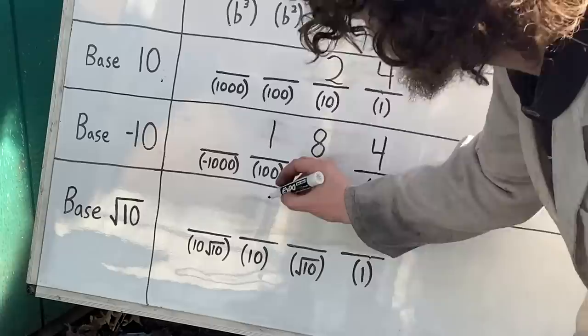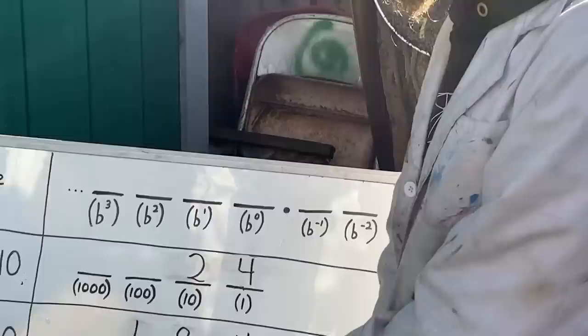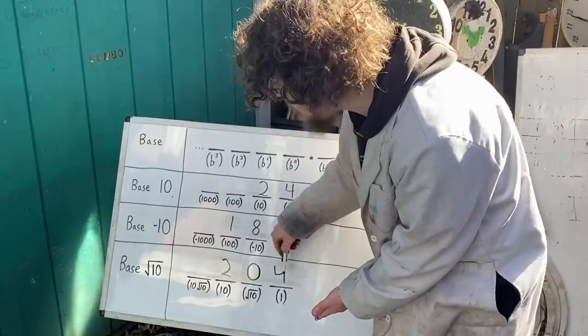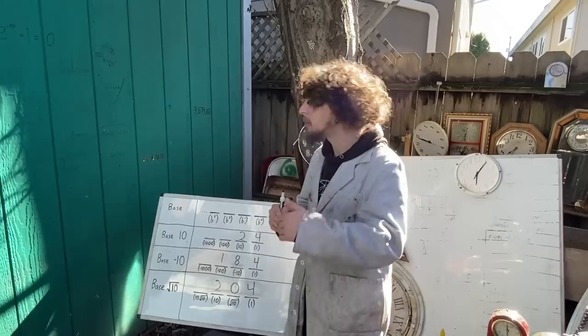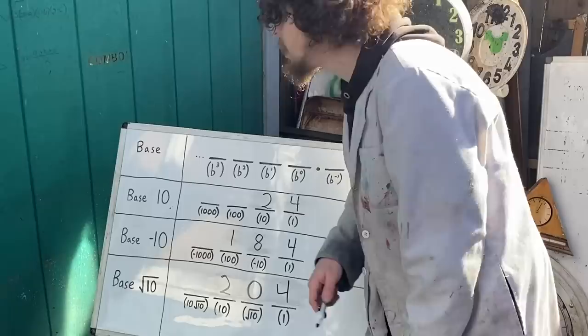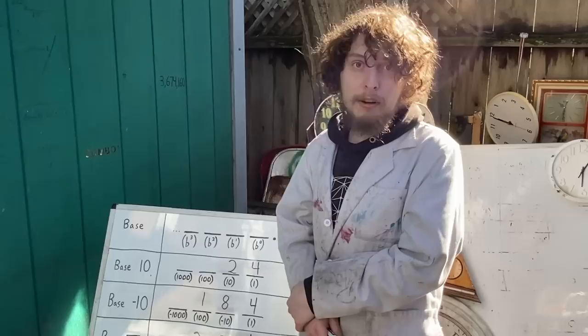Like 24 would just be 2, 0, 4 in base square root of 10 if I allow myself to use any symbol between 0 and 9. So our goal isn't always gonna be to use symbols that are up to the number right under the base. The goal is what's the minimal collection of symbols that would let us write all of the integers as a finite length string.